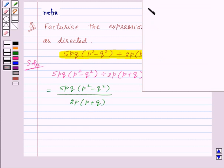Now recall the identity a plus b into a minus b is equal to a square minus b square. Here in the given expression, p square minus q square is the same as a square minus b square.